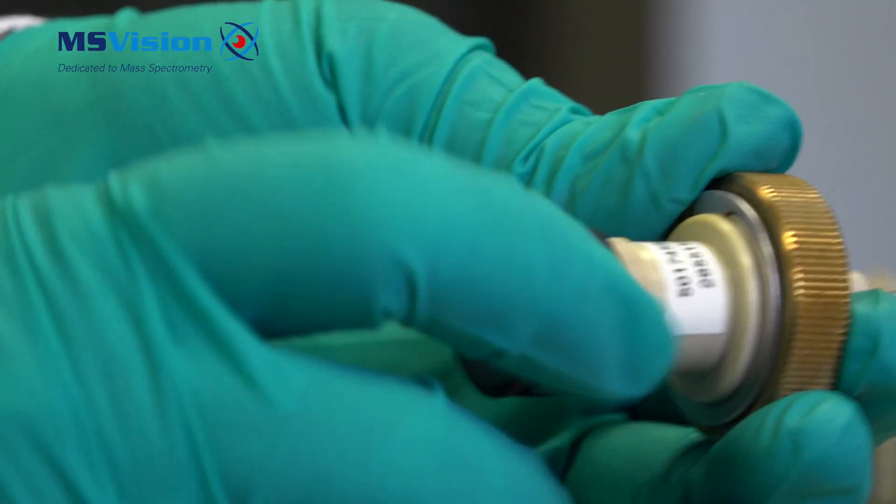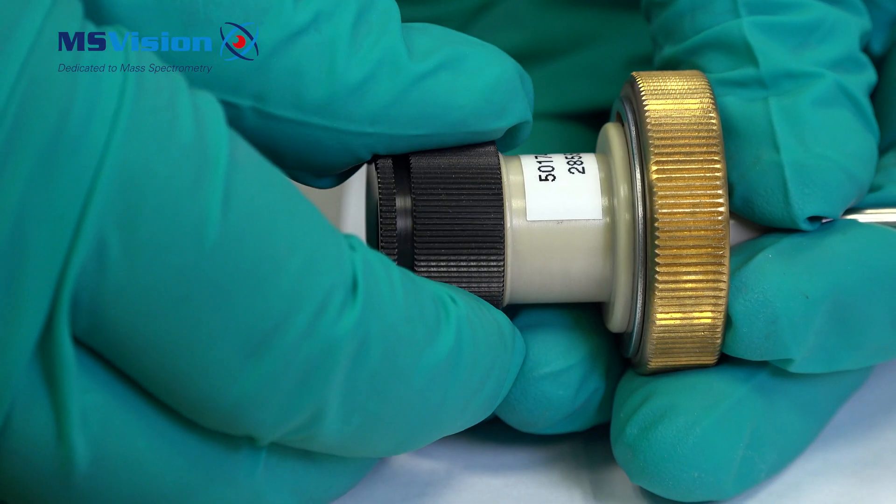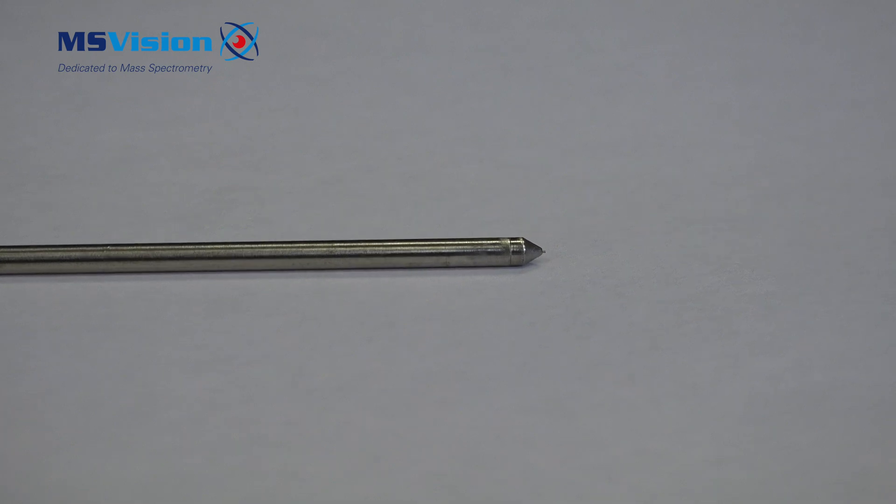Screw the black cap on and use it to adjust the position of the capillary tip to be approximately one millimeter out from the probe tip.